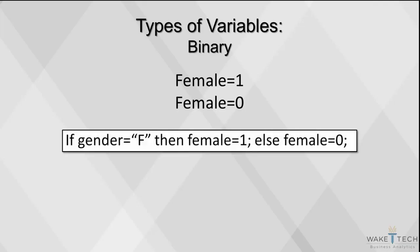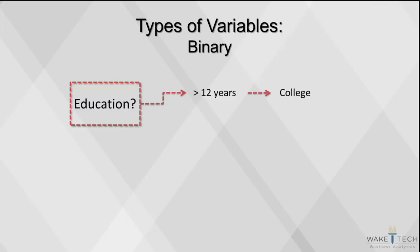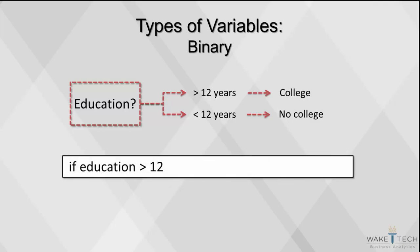Here's an example. If we're asking about the number of years of education a person has, with a value of 1 for each year of education, that would mean anyone with more than 12 years has been to college, and anyone with less than 12 has not. We can recode into a binary yes-no variable by saying that if education is greater than 12, college equals 1; otherwise, college equals 0. This type of coding is useful in descriptive and predictive analytics.